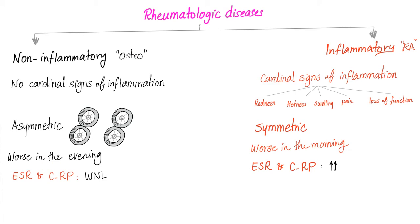Non-inflammatory arthritis is worse in the evening because of more wear and tear throughout the day. Inflammatory arthritis is worse in the morning, and as the day progresses, you wash out the inflammatory debris and feel better. In non-inflammatory arthritis, acute phase reactants are within normal limits. In inflammatory arthritis, ESR and C-reactive protein will be high.